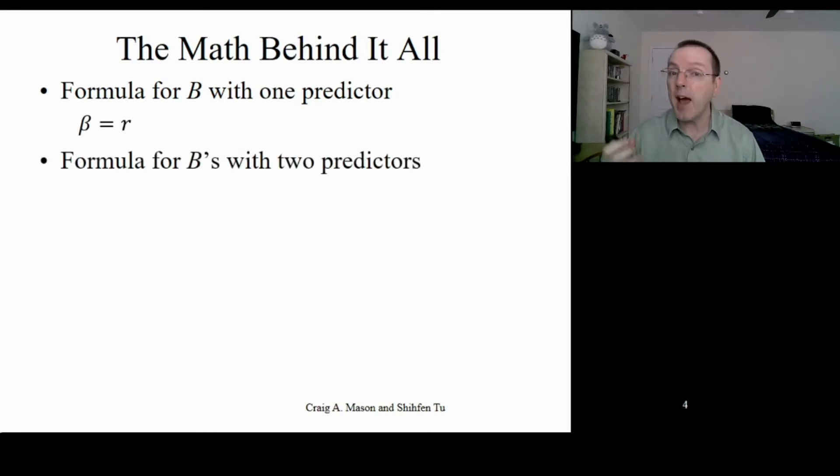If we have an outcome y and two predictors, x1 and x2, the formula for the standardized regression coefficient for x1 is the correlation between y and x1, minus the correlation between y and x2 times the correlation between x1 and x2, all of that divided by 1 minus the squared correlation between x1 and x2.